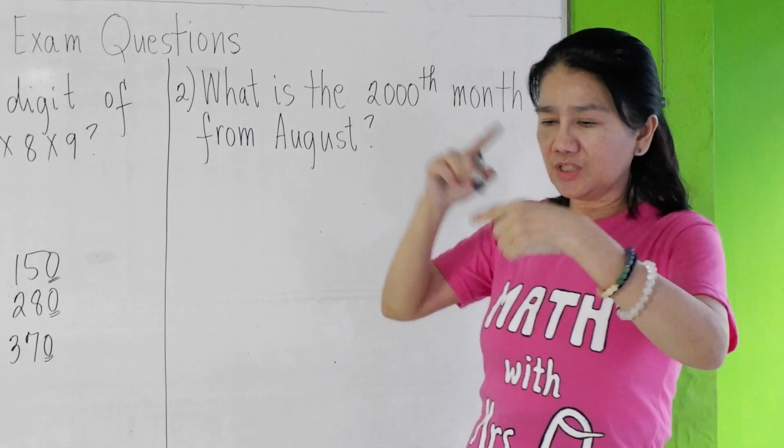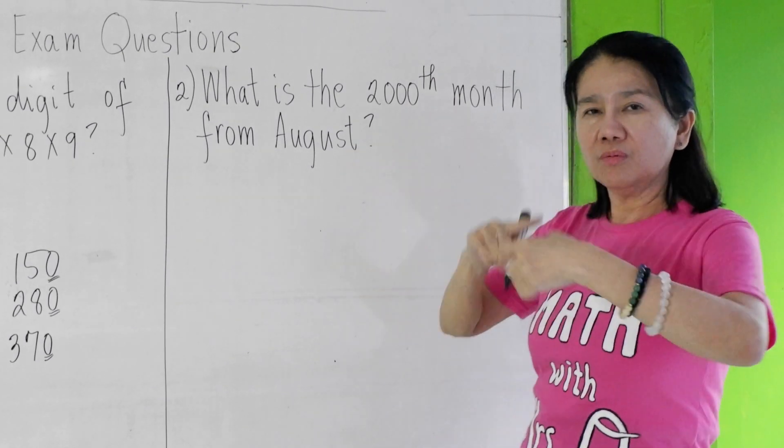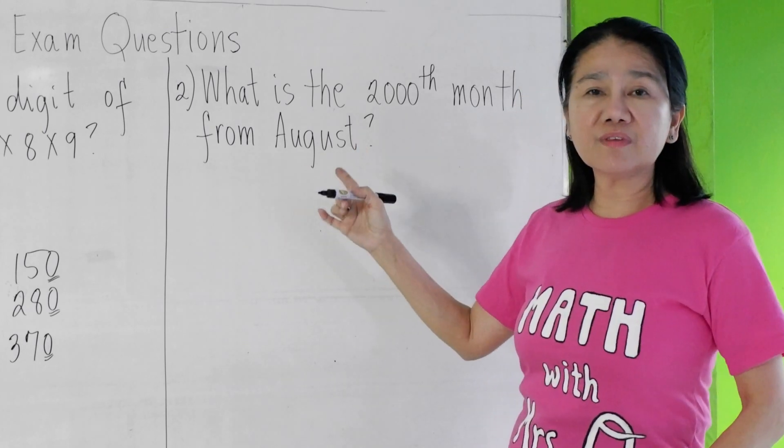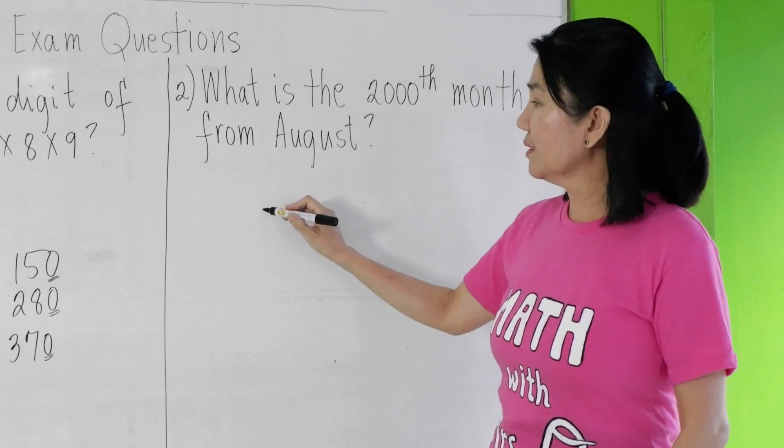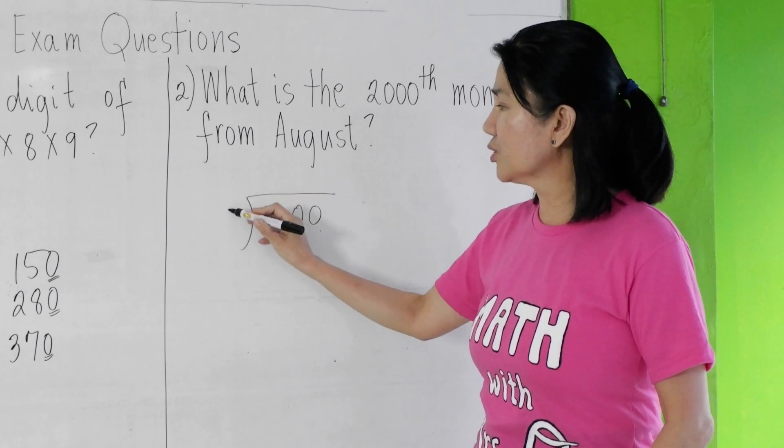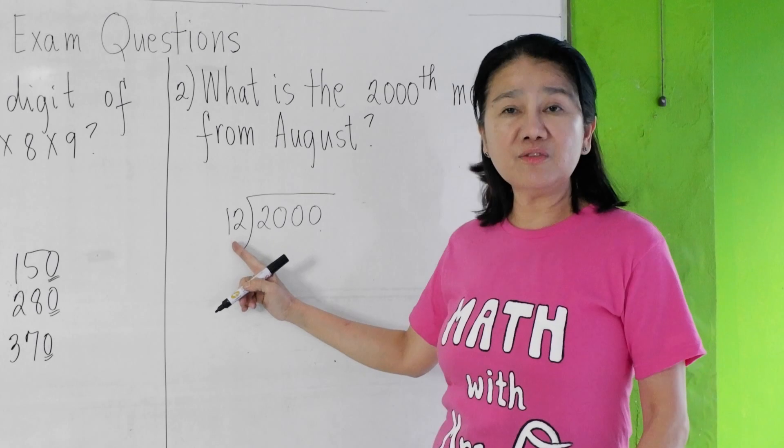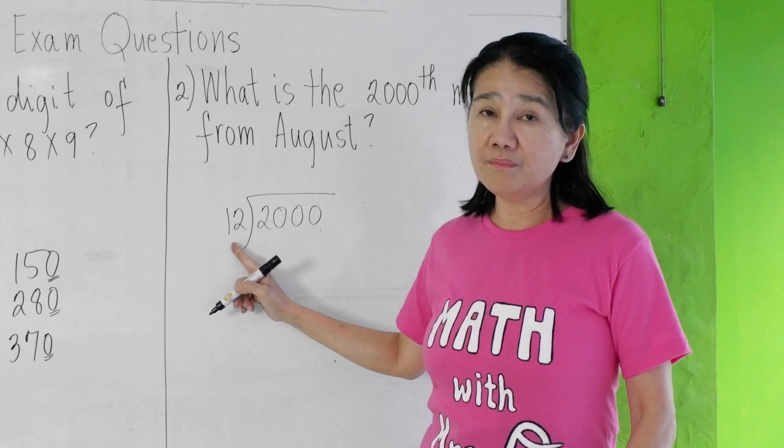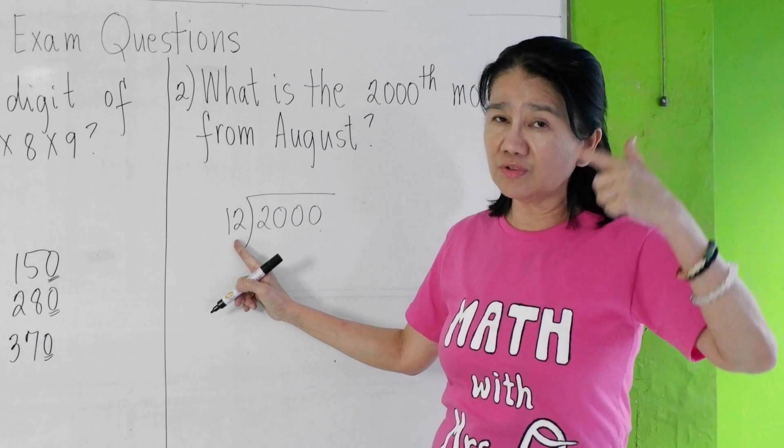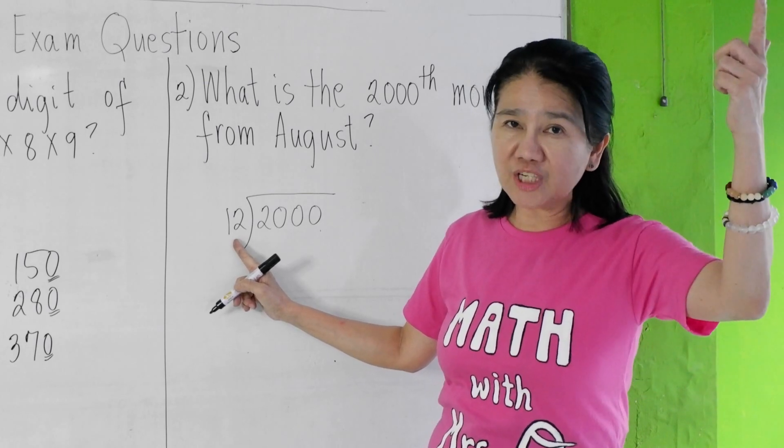Therefore, you just go back in a circle. So how do you solve this? Very easy. You divide 2000 by 12. Why are we dividing by 12? Because there are 12 months in a year. After January to December, you go back to January again.